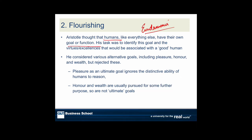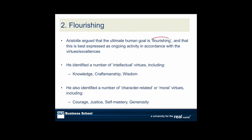To summarise: humans have their own goal or function, and if we can identify the attributes of a good human, what we will end up doing is flourishing. The alternatives — pleasure, honour, wealth — are rejected. He rejects hedonistic pleasures because they don't take account of human rationality. He also rejects honour, wealth, and power because we pursue them to get something else, so they're not the ultimate goal. Instead, he believes that flourishing is best expressed as acting in accordance with virtues or excellences. And he separates these into two kinds of virtues.